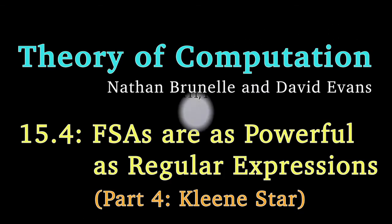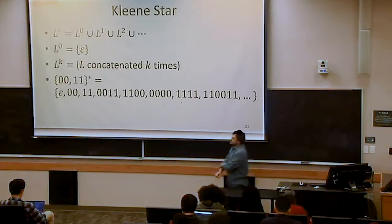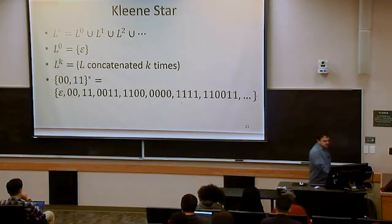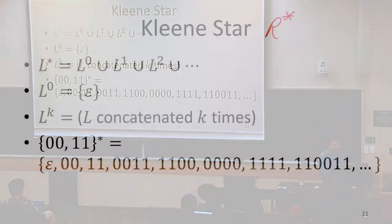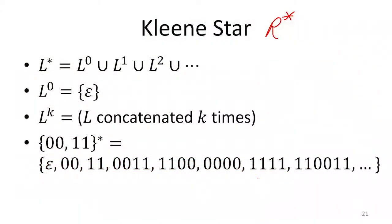We have only one more operation that we need to talk about, and that is the Kleene star. If I have some regular expression R, then I can build this regular expression R star, where R star meant a string matched R star if we could break it into any number of chunks where every single chunk matched R.